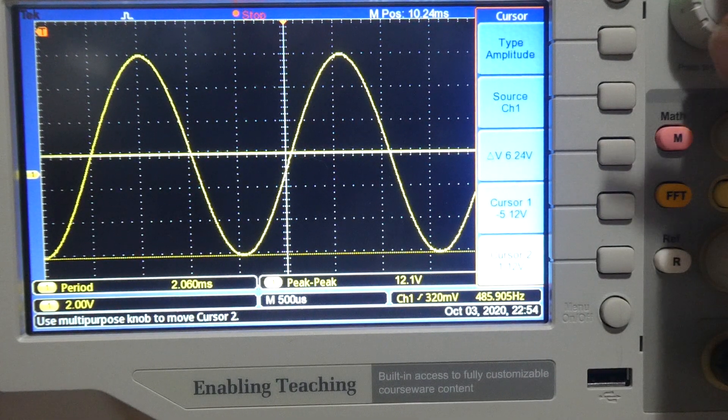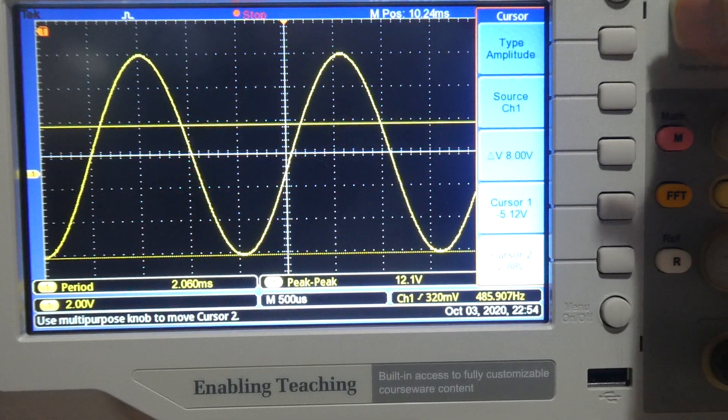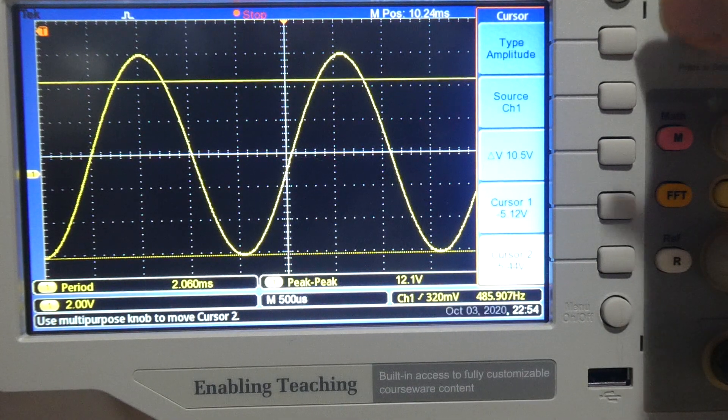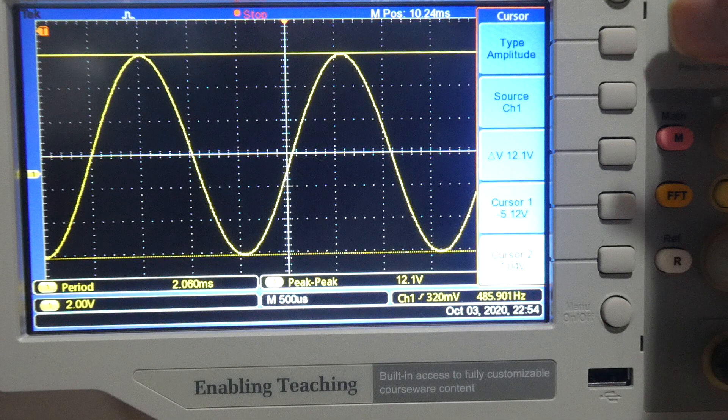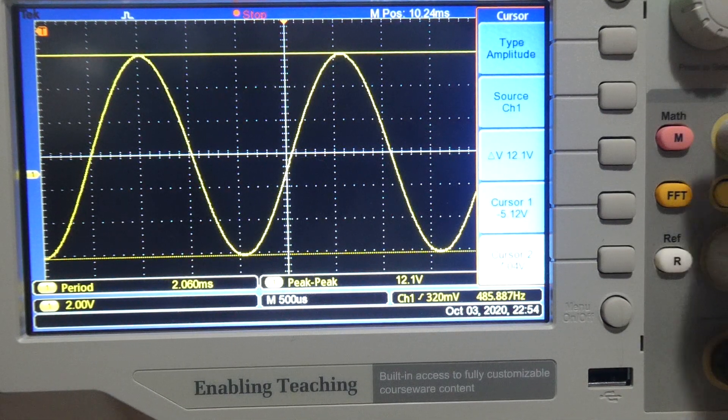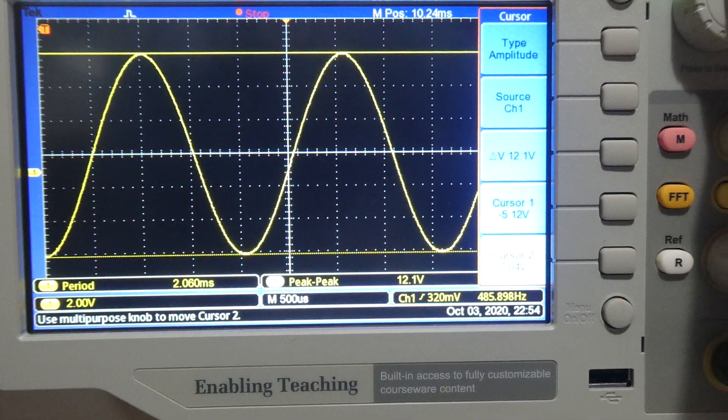Move to channel cursor 2. Cursor 2, I can move that up the screen. 7.4 volts. I'll accept that.